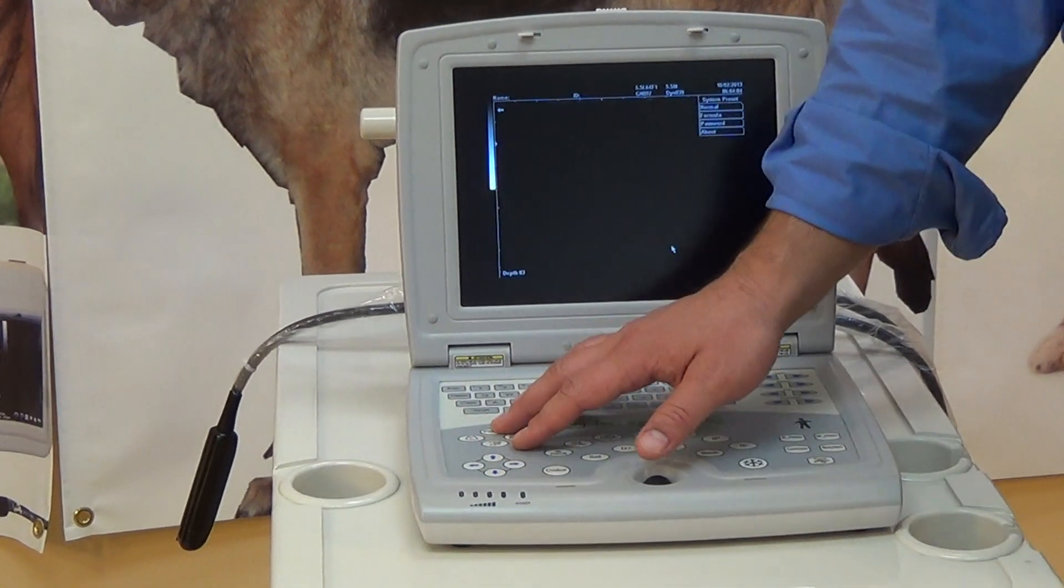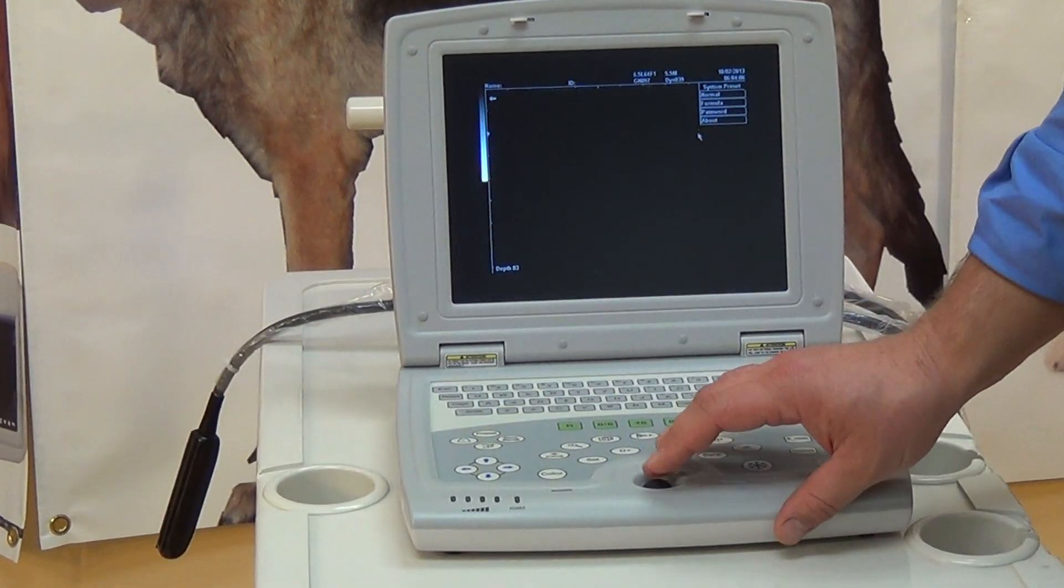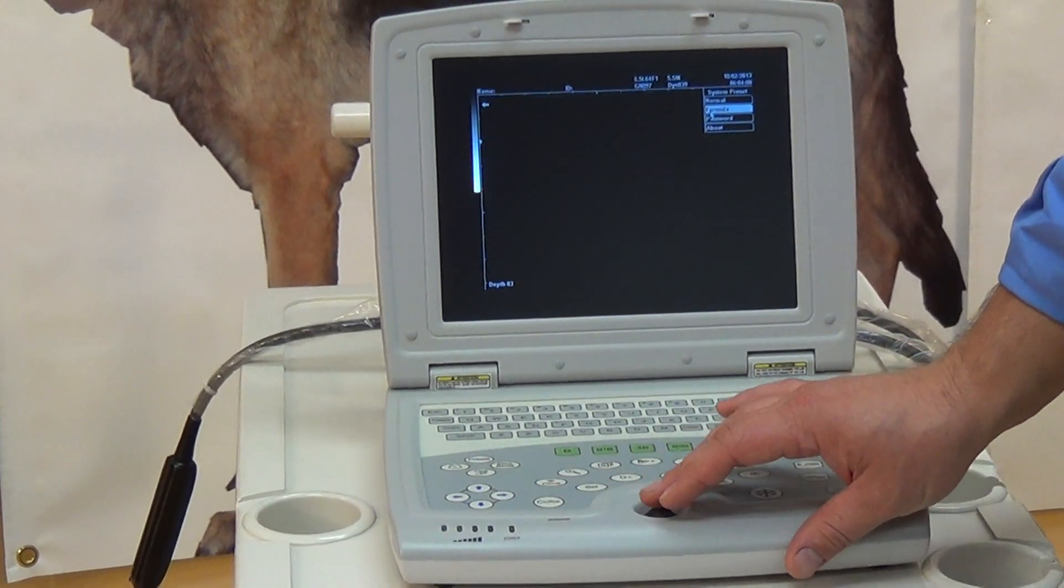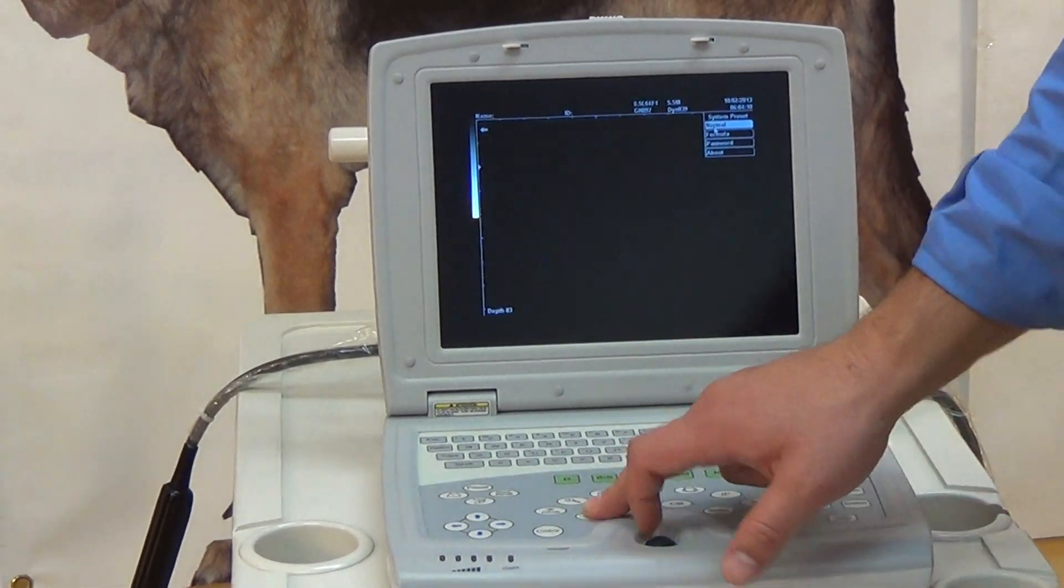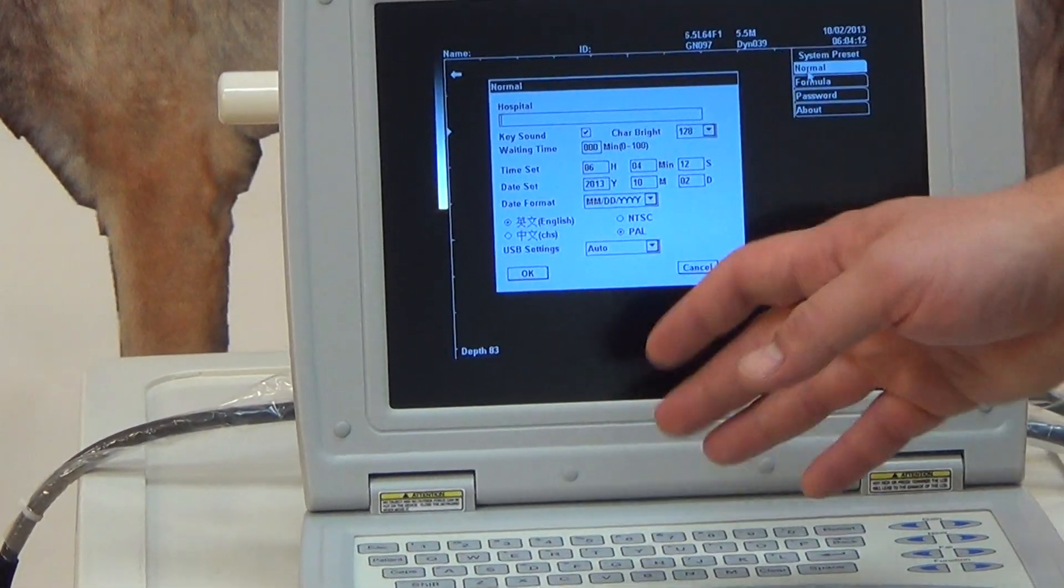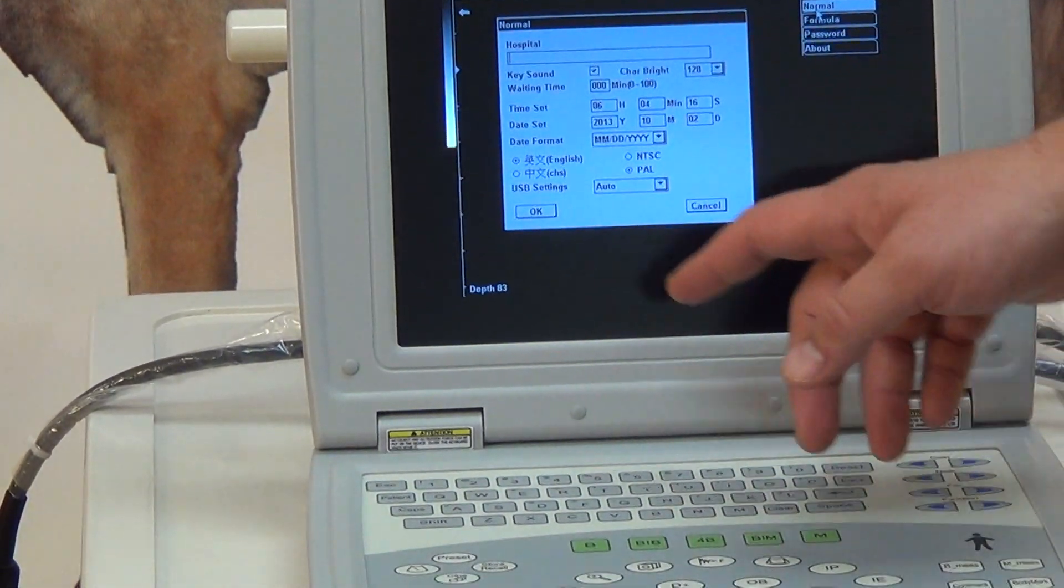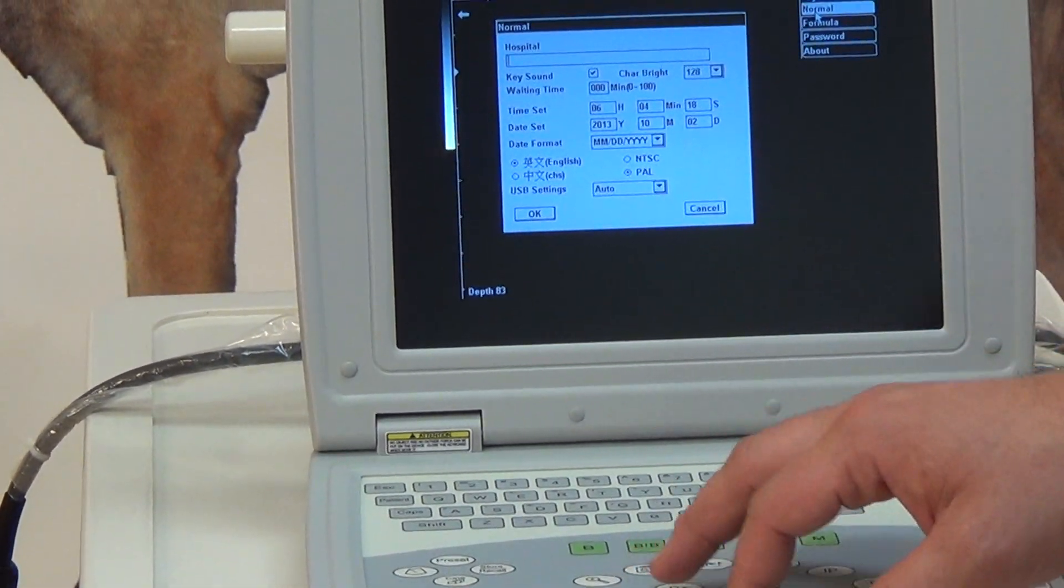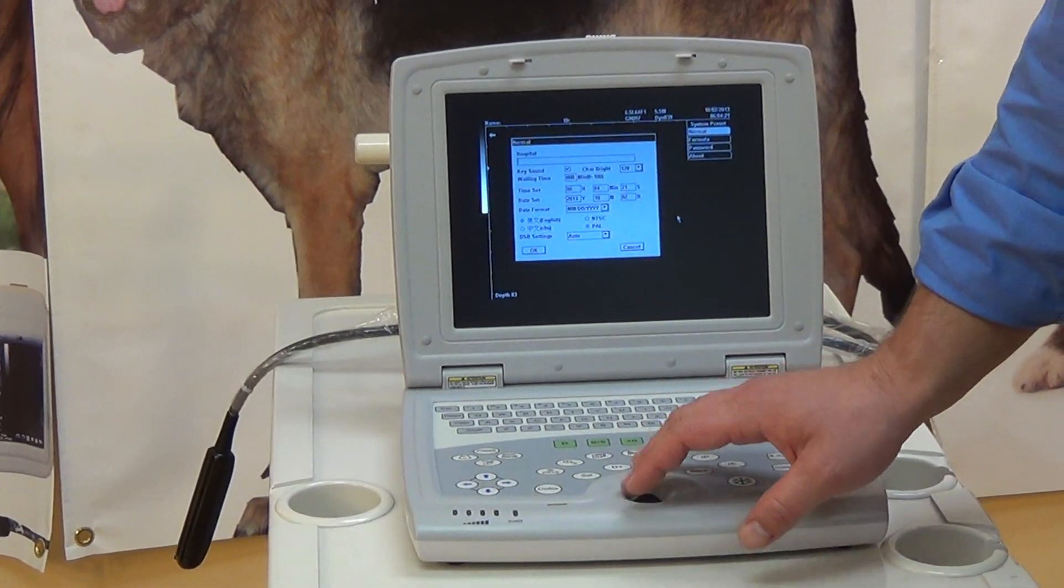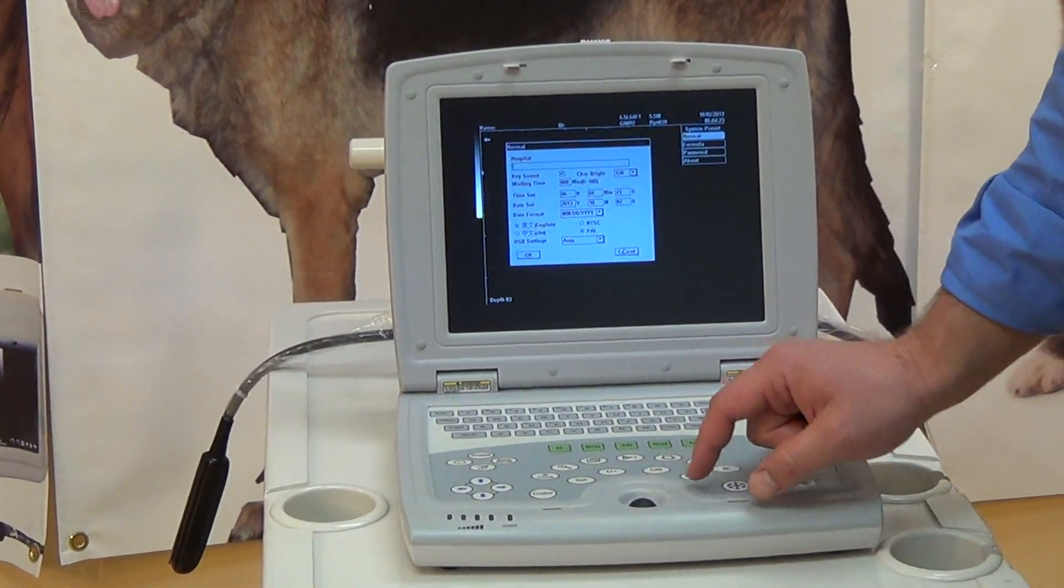So we'll start out with the preset button. This allows you to change things like your formulas for OB settings. If you select the normal part, you could put in like hospital name, change the date and time, language settings, and how you save via USB. Usually we set it to auto so it automatically goes straight to your USB. That's what most people prefer for saving images.